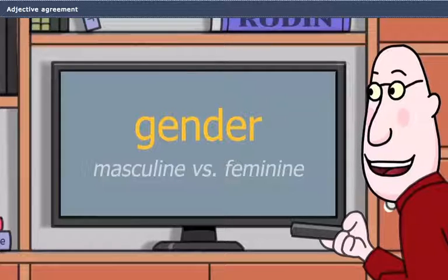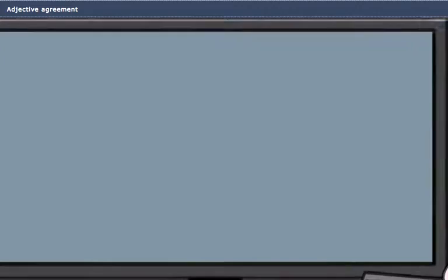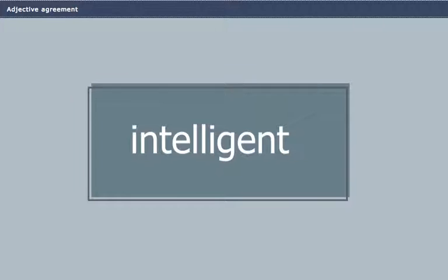Most adjectives form the feminine by adding a silent e to the end of the masculine form. For example, intelligent is the masculine form of the French word for intelligent. Intelligente is the feminine form.